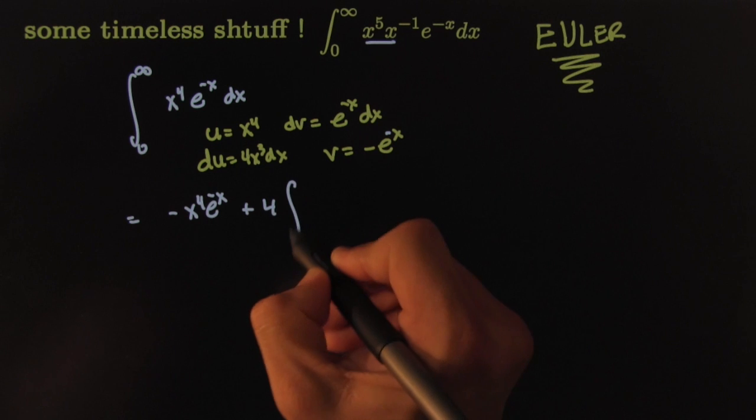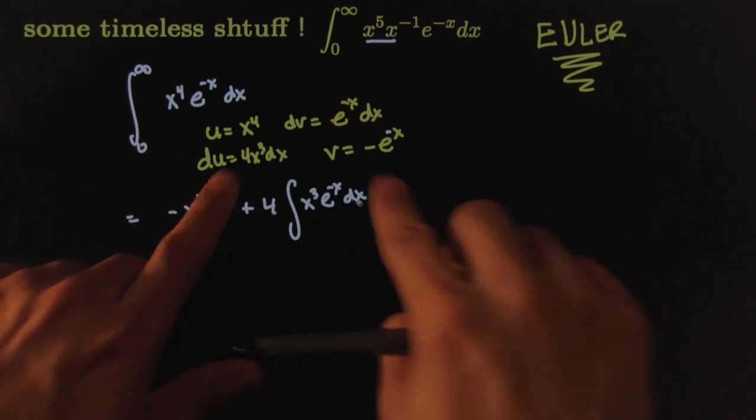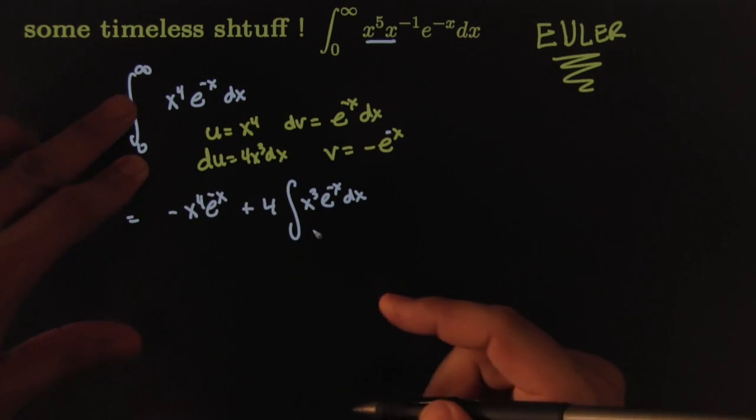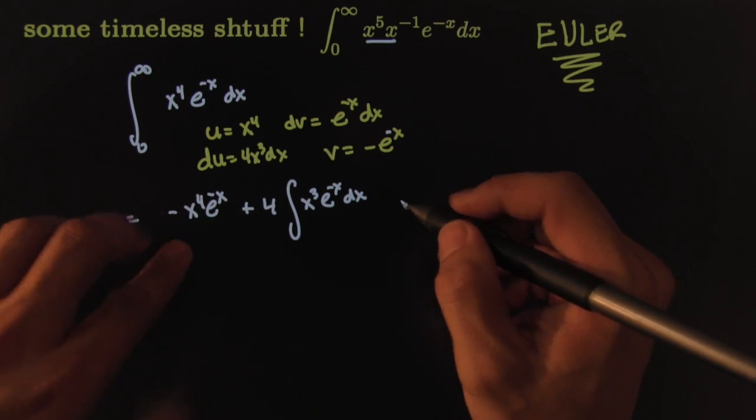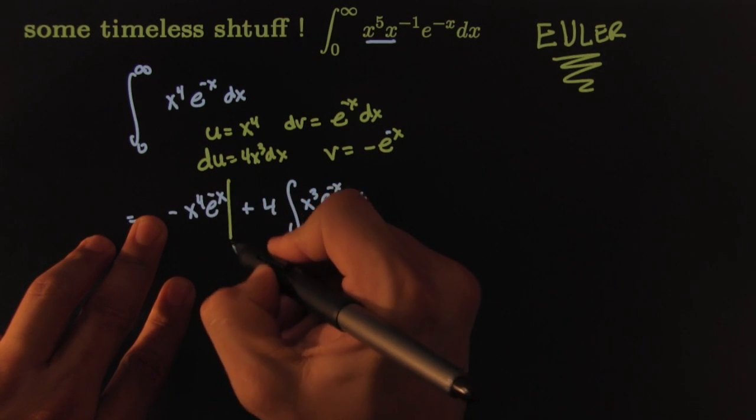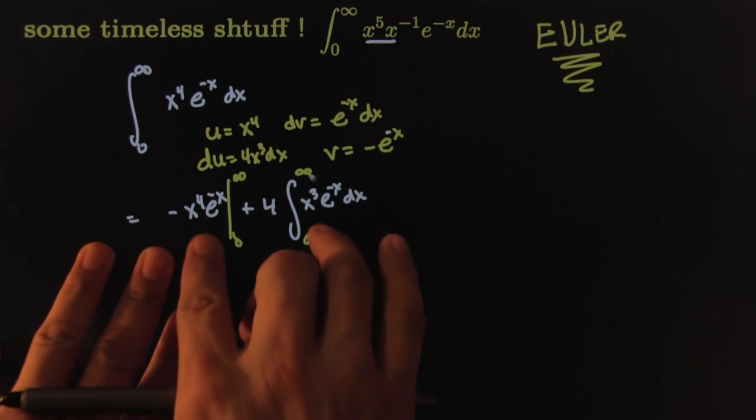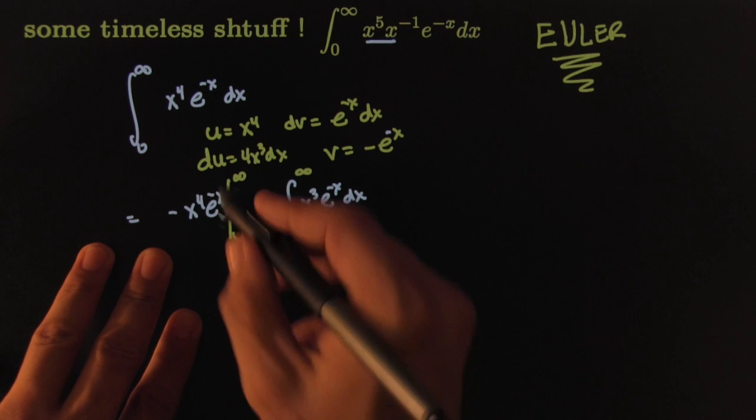Four times the integral of x to the third e to the negative x dx. That's v du. And of course these are all still going from zero to infinity. I could put my big limits here from zero to infinity, or I could put them in each piece and handle them in separate little pieces. So I'll go from zero to infinity, from zero to infinity, and I'll try to handle each of these separately.